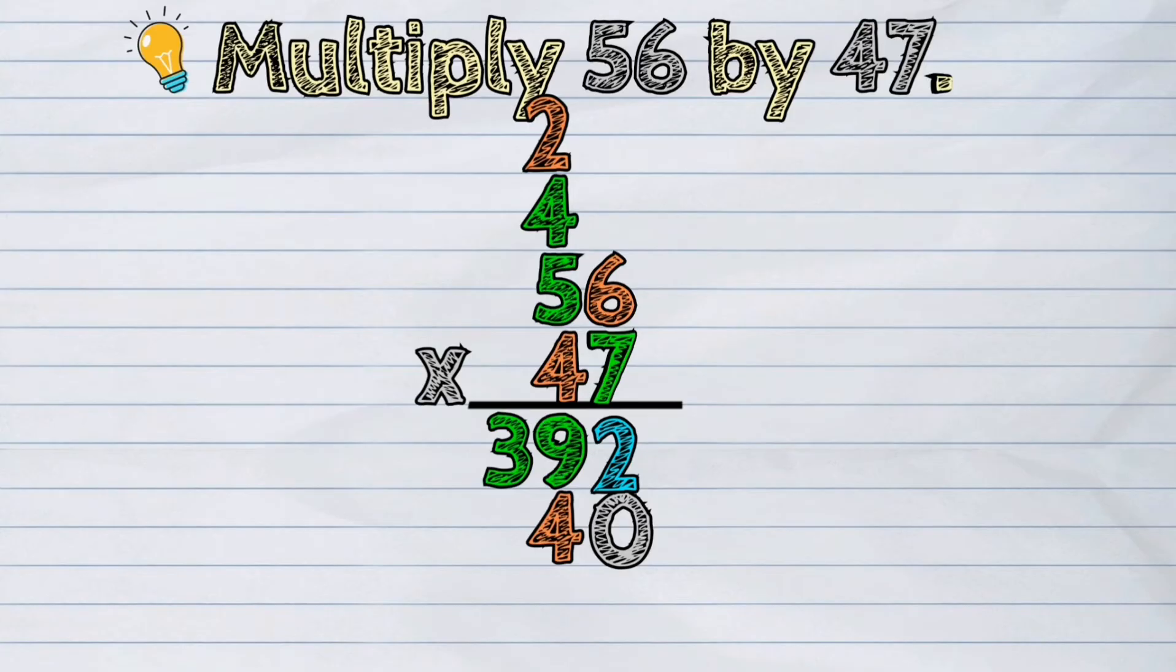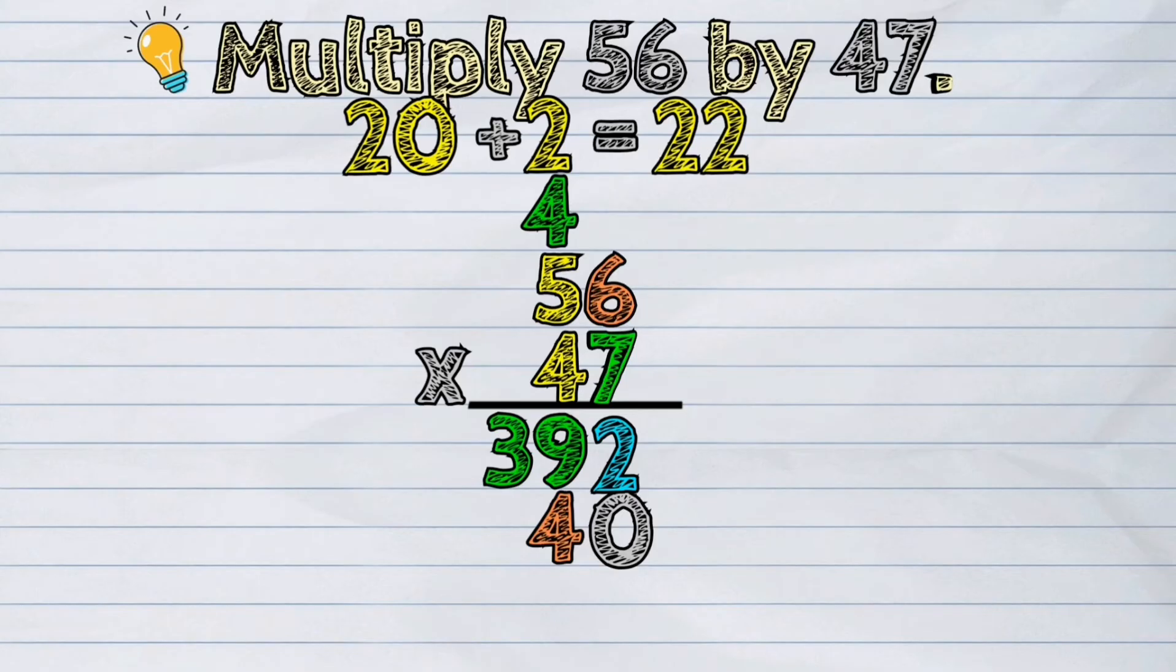Let's proceed to the next step. Multiply the tens on the bottom by the tens on the top. 4 tens times 5 tens is 20 hundreds. Add the regrouped amount from the previous step. 20 hundreds plus 2 hundreds is 22 hundreds.